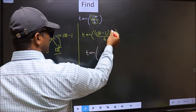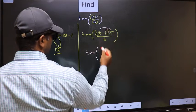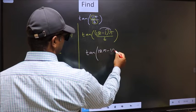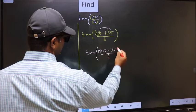Now, you should open the brackets. You get 12π minus 1π by 6.